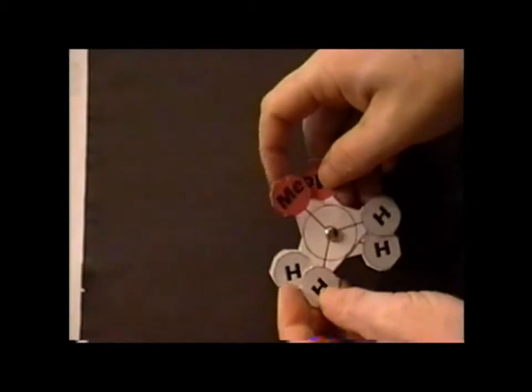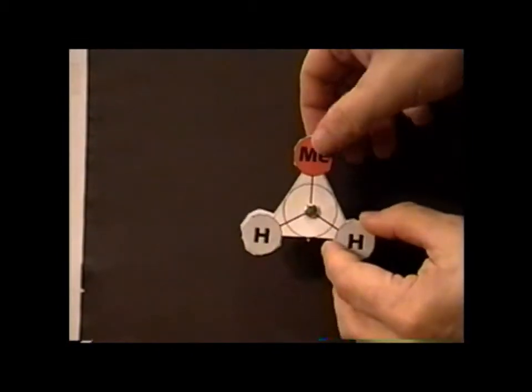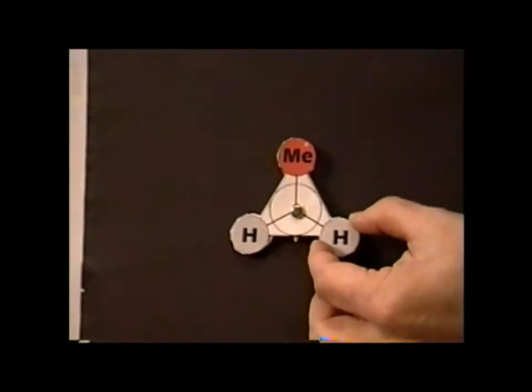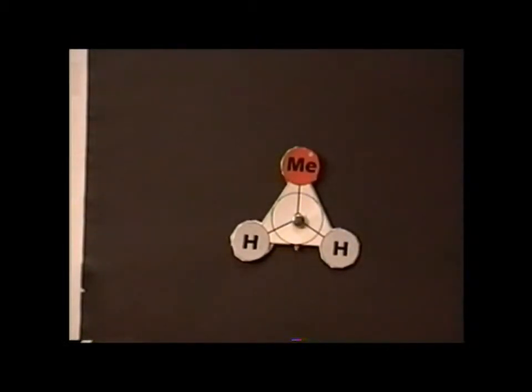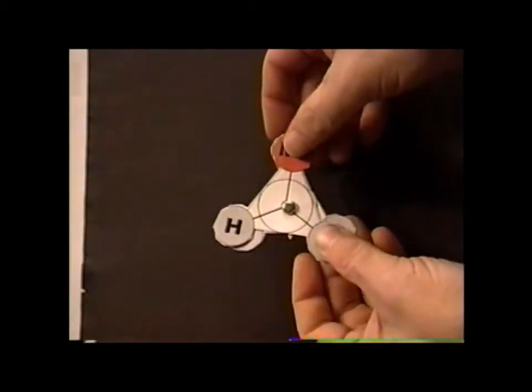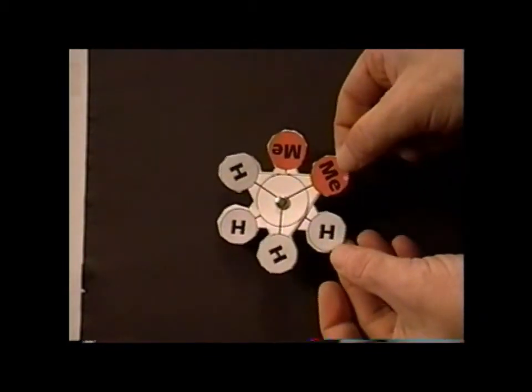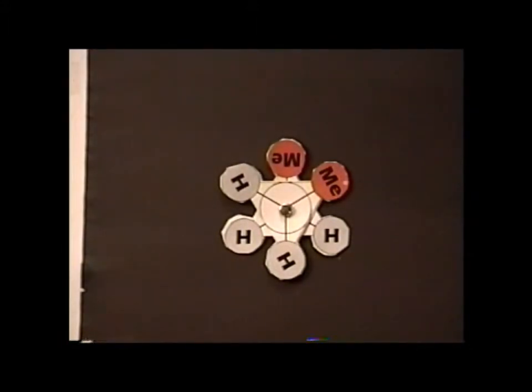For example, we still have the eclipse conformation, so that the two methyl groups are essentially directly in front of each other. Because there is steric hindrance, this is the high energy conformation. As we turn and we reach the first or the nearest of the staggered conformations, here the two methyl groups are still relatively close to each other. This is known as the gauche conformation.